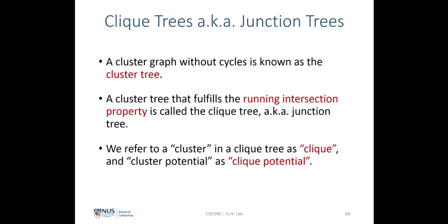A cluster graph without any cycle is known as a cluster tree. A cluster tree that fulfills the running intersection property is called a clique tree, otherwise known as the junction tree. From now on, we will refer to a cluster in a clique tree as a clique and a cluster potential as a clique potential, using the terms interchangeably.